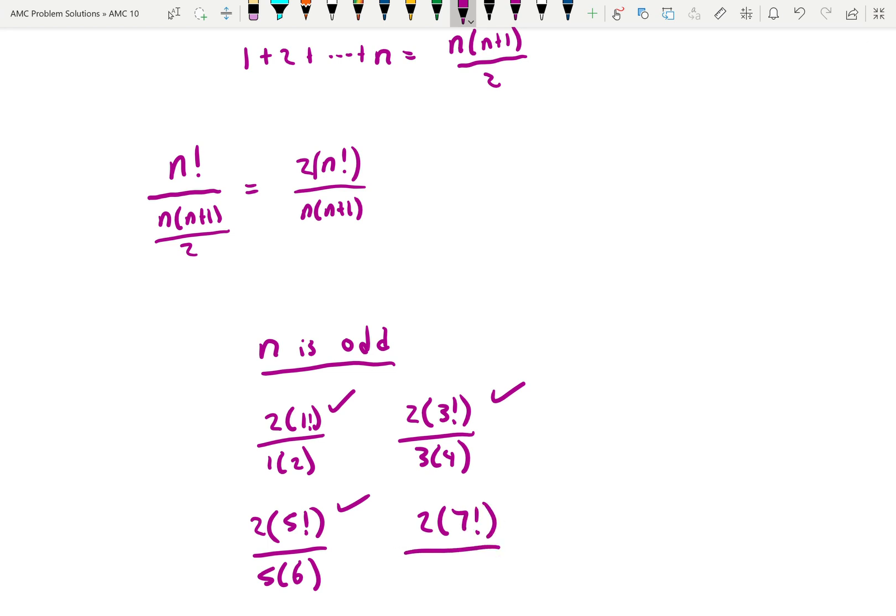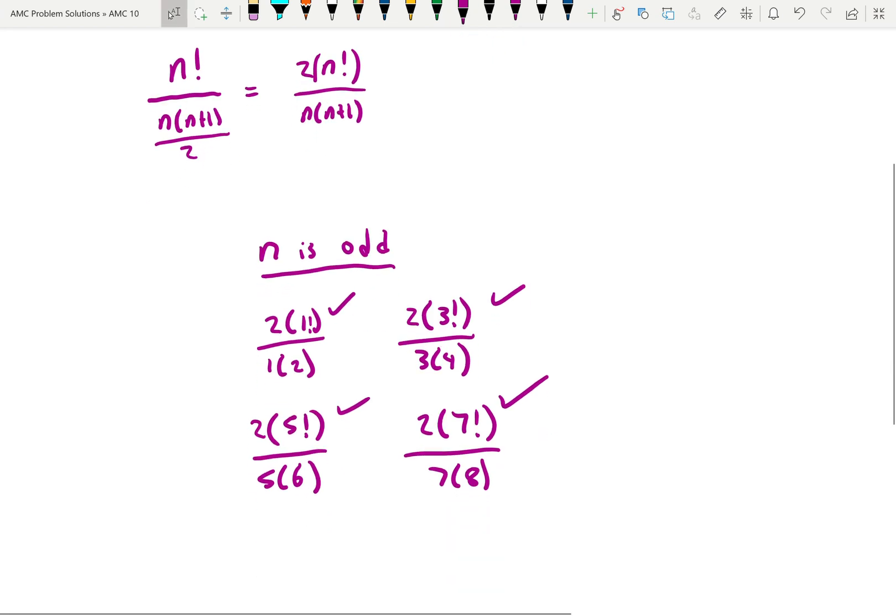Like if we look at 2 times 7 factorial, 7 times 8, the 7 is going to divide the 7 in 7 factorial. And then 8 is a factor, then we're left with 6 factorial. So actually when n is odd, all odd values of n will work.